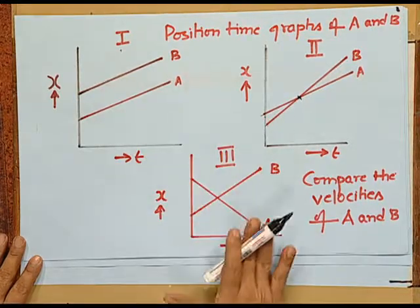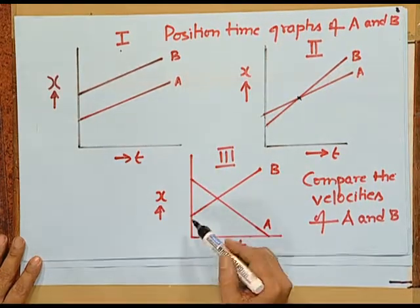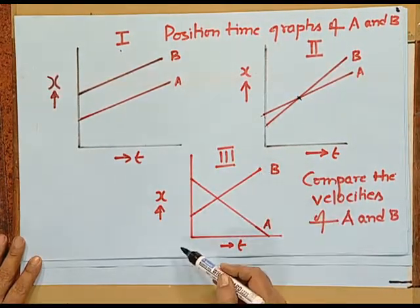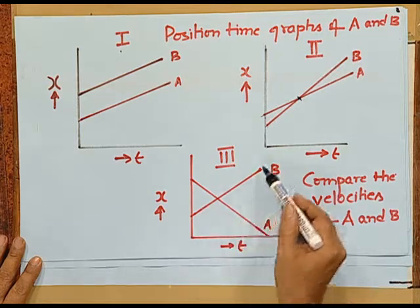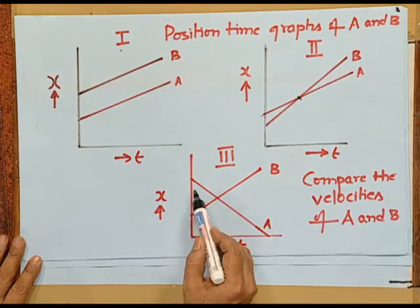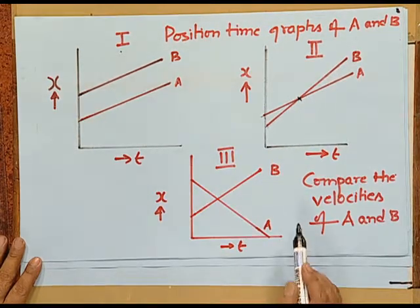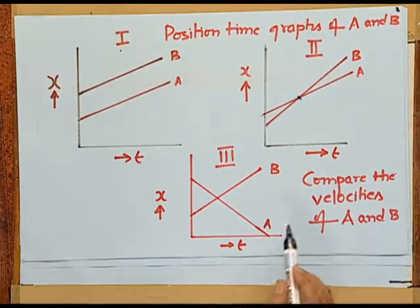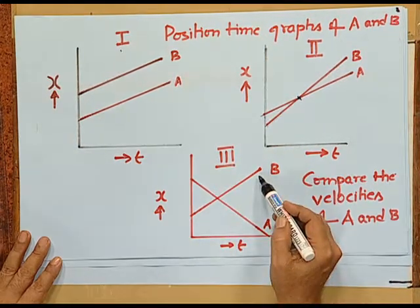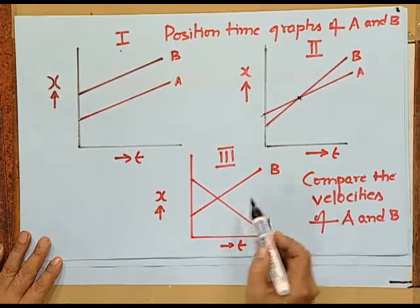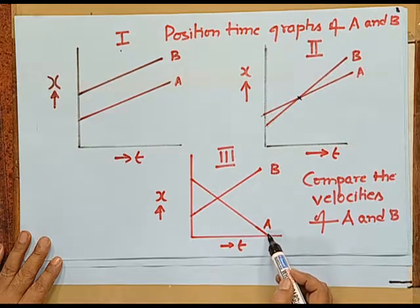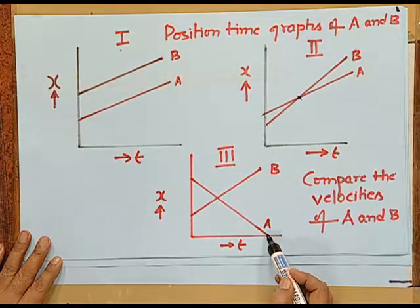In case 3, the x versus time graph of B increases with time while that of A is decreasing with time. Notice that the slope of B is positive and the slope of A is negative. What does this mean?